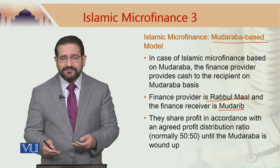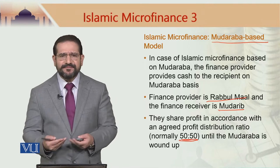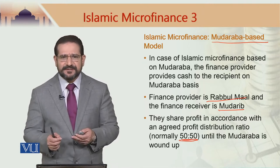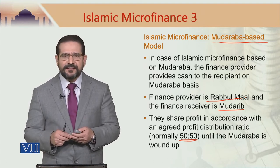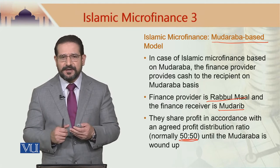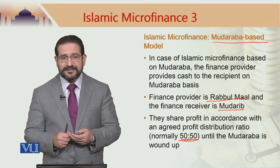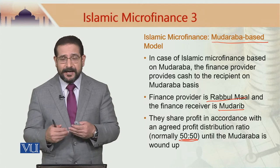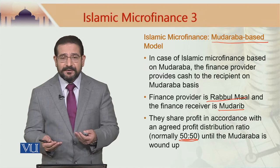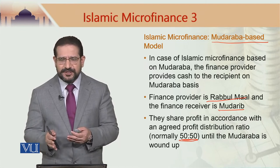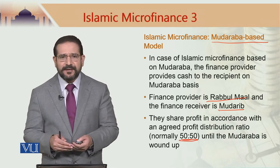In the context of microfinance, the profit distribution ratio is normally 50-50, though it could be any other figure. What matters is that microfinance uses Mudarabah in such a way that it becomes a compassionate arrangement between the provider and recipient of microfinance. At the end, when the Mudarabah is wound up, there is very preferential treatment for the microfinance recipient, as will be explained shortly.